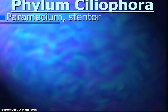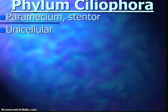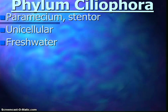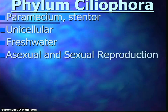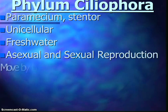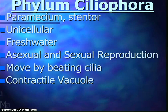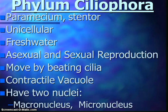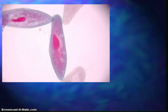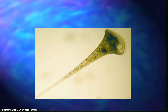Now the ciliates — paramecium and stentor. These are unicellular organisms found in freshwater. They use cilia to move by beating them, and they also use cilia to sweep food into the cell. The cilia often cover the entire surface of the cell. They can reproduce asexually or sexually and have a contractile vacuole. They also have two nucleuses: a macronucleus and a micronucleus. The macronucleus is large — it controls the cell's metabolism, everyday functions, asexual reproduction by binary fission, and makes RNA. The micronucleus is small and only controls the cell's reproduction through conjugation. We'll look at the paramecium and the stentor in class.